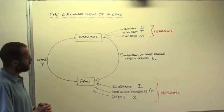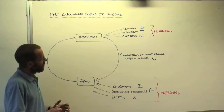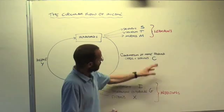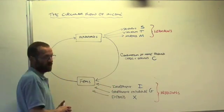An economy will be in equilibrium - remember a position from which there's no tendency to change - when injections are equal to leakages. In other words, the amount of money flowing out is the same as the amount of money flowing in.